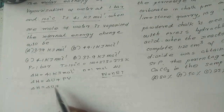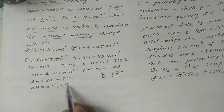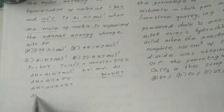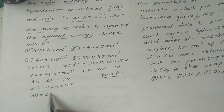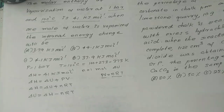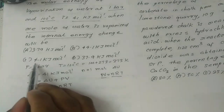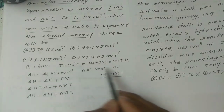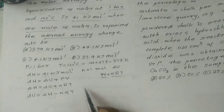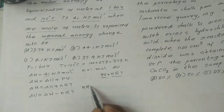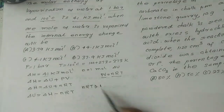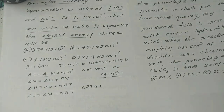Using the relation: delta U equals delta H minus n into R into T. So delta U is equal to delta H minus n R T, substituting the given values.